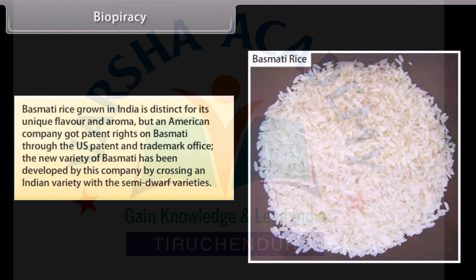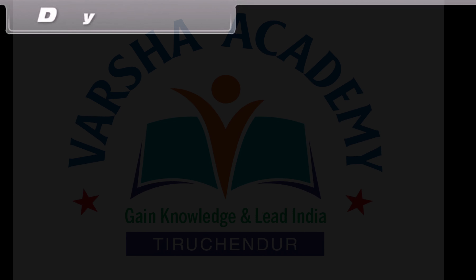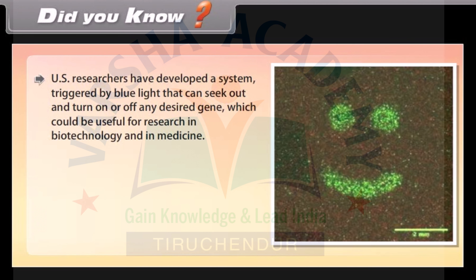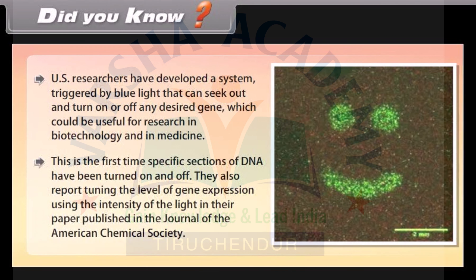Did you know? US researchers have developed a system triggered by blue light that can seek out and turn on or off any desired gene, which could be useful for research in biotechnology and in medicine. This is the first time specific sections of DNA have been turned on and off. They also report tuning the level of gene expression using the intensity of the light, in their paper published in the Journal of the American Chemical Society.